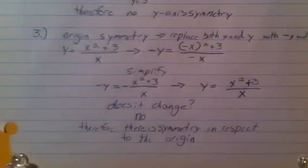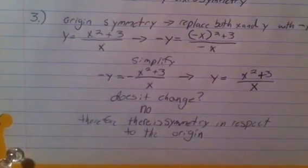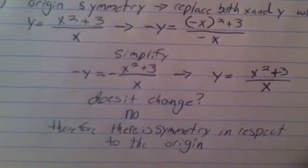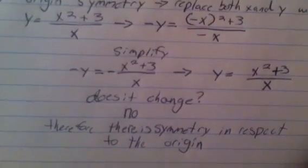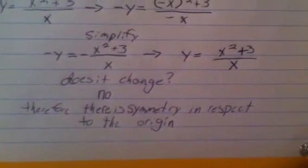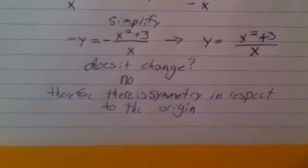Third, we must test for origin symmetry by replacing both x and y with negative x and negative y. So y equals x squared plus 3 over x becomes negative y equals negative x squared plus 3 over negative x. We simplify that: negative x squared plus 3 over negative x simplifies the same way as above to get negative of x squared plus 3 over x, with negative y on the other side. We then further simplify by canceling both negatives to get y equals x squared plus 3 over x. Since this is the same as our original equation, it has not changed, therefore there is symmetry with respect to the origin.